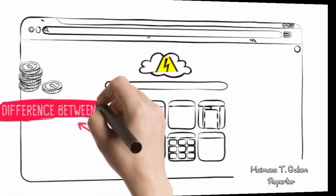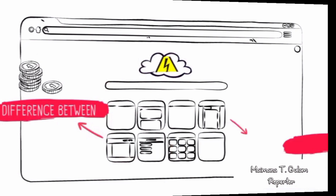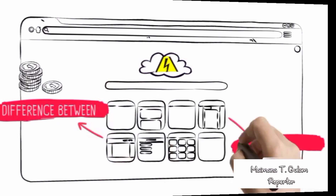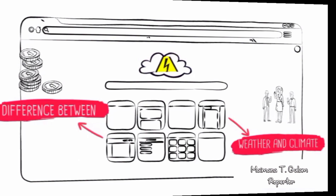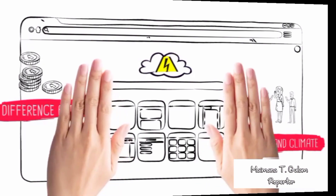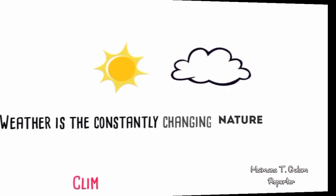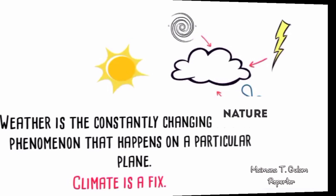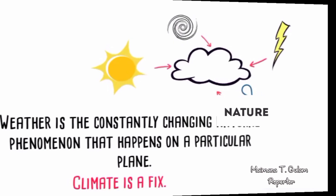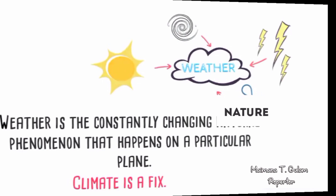There is a difference between weather and climate. Weather is the constantly changing natural phenomenon that happens on a particular place, while climate is fixed.